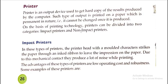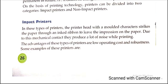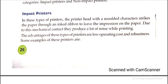On the basis of printing technology, printers can be divided into two categories: the first one is impact printer and the second one is non-impact printer. In impact printers, the print head with a molded character strikes the paper through an ink ribbon to leave an impression on the paper. Due to this mechanical contact, they produce a lot of noise while printing, and their speed is also very slow.